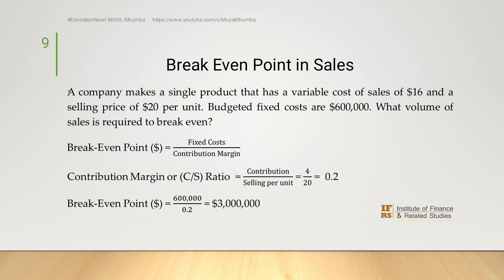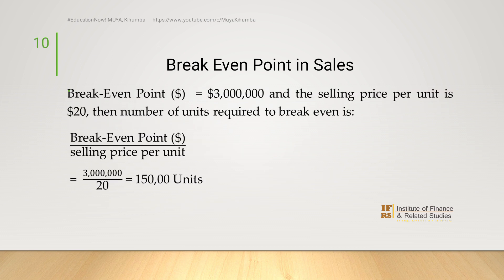Let's look at an illustration. A company makes a single product that has a variable cost of $16 and a selling price of $20 per unit. Budgeted fixed costs are $600,000. What volume of sales is required to break even? Using the contribution margin method: contribution margin is 20%, so break-even point in sales is $600,000 divided by 0.2, which equals $3 million. To get break-even in units, divide $3 million by the selling price of $20, giving 150,000 units.